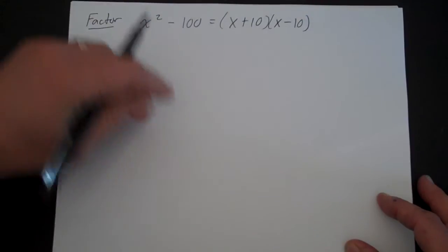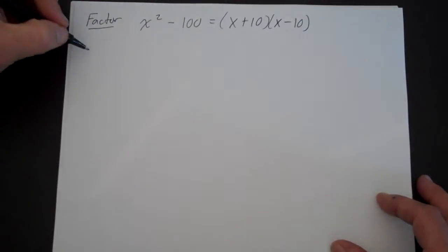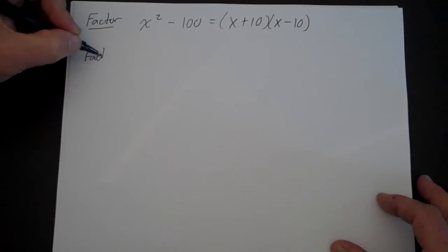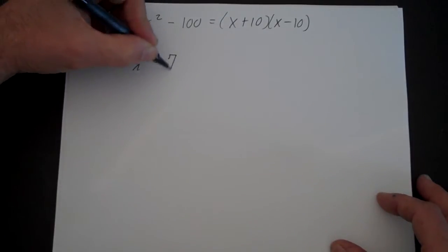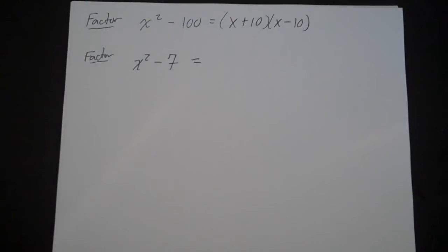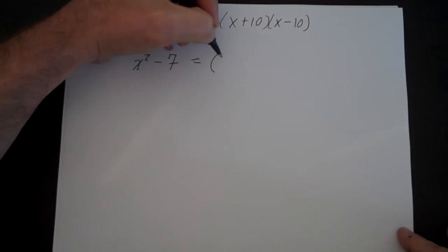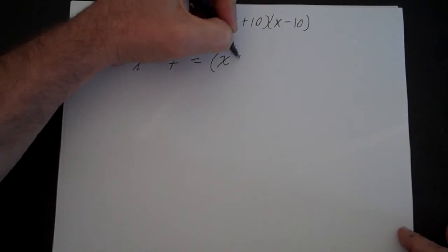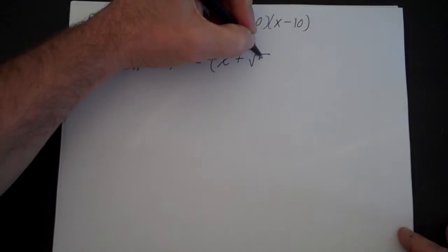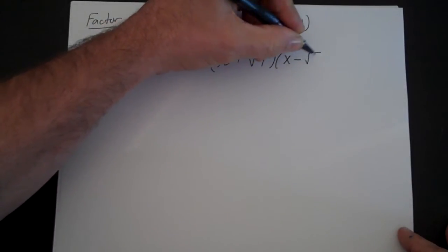Now we come to a slightly more difficult problem. We've seen that x squared minus 100 factors as x plus 10 and x minus 10, because both terms are perfect squares with a minus between them — the difference of two squares. So let's factor x squared minus 7. You'll often be told in Algebra 1 or Algebra 2 that you can't factor this, but you can: it's going to be x plus the square root of 7 times x minus the square root of 7.